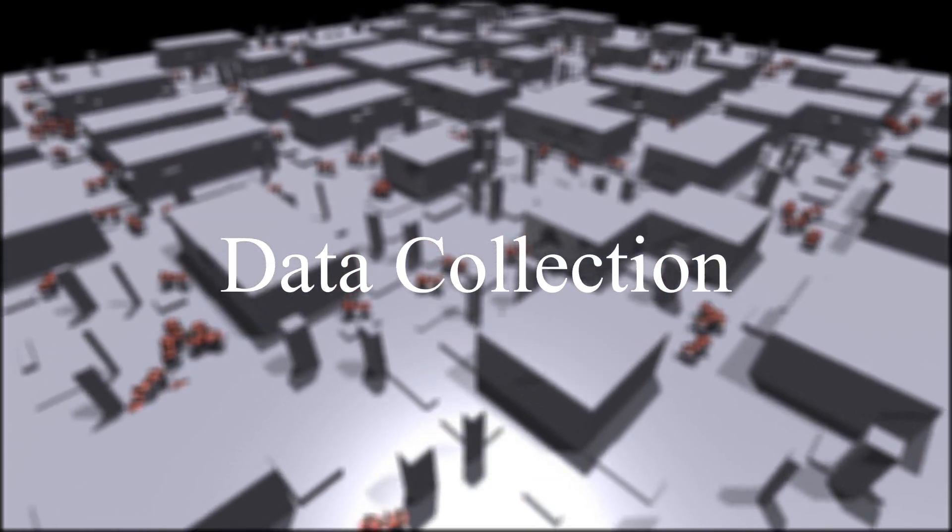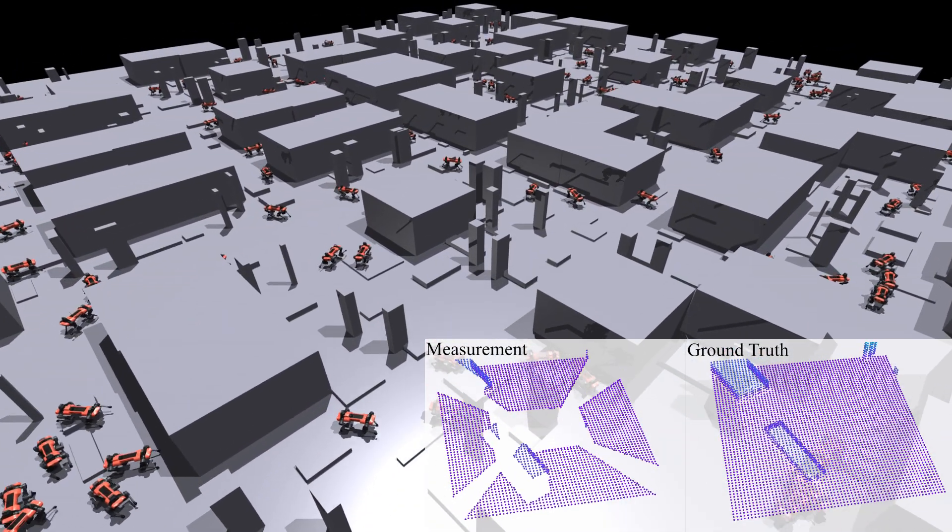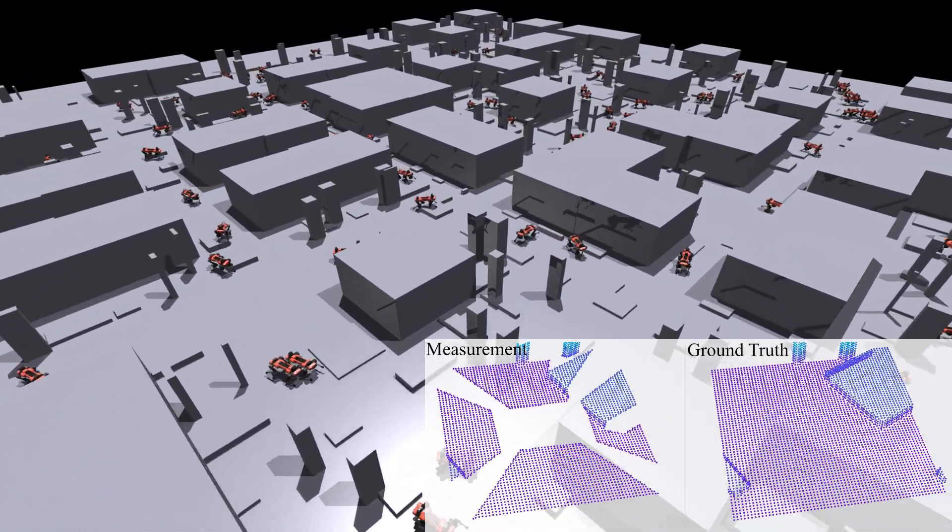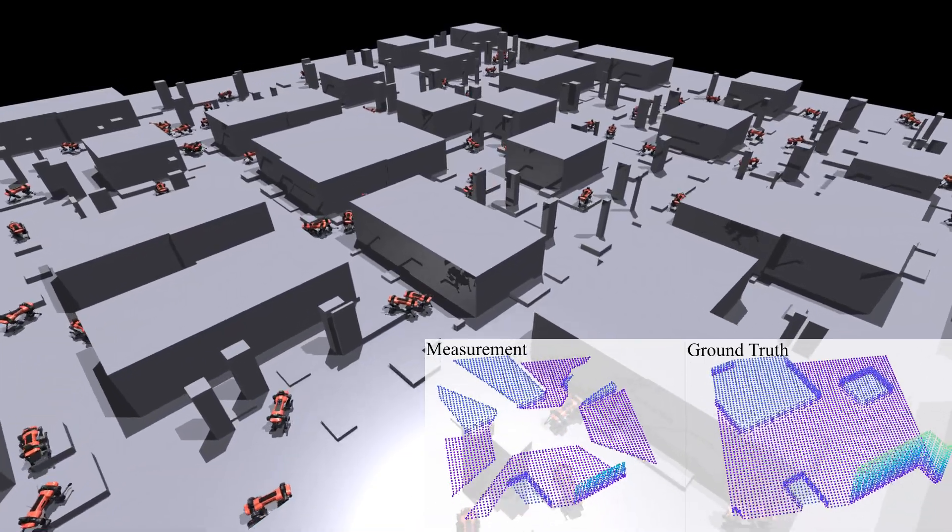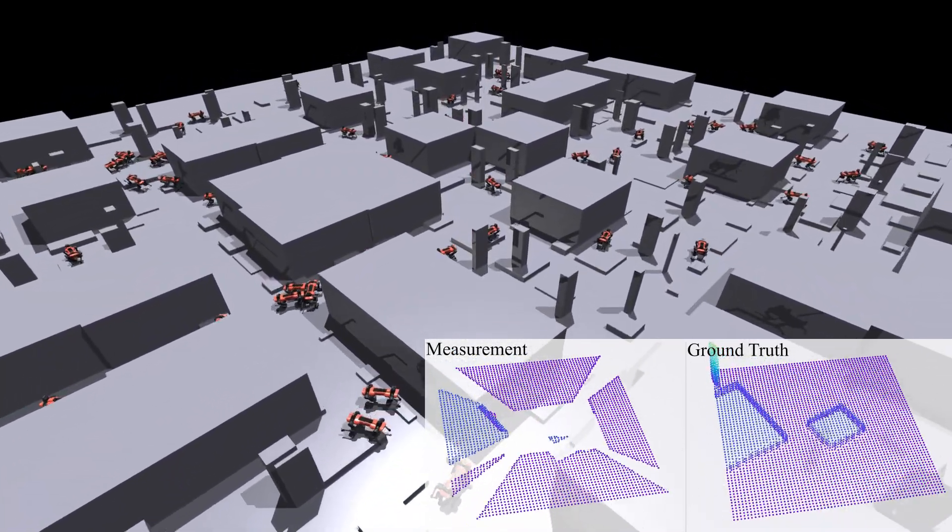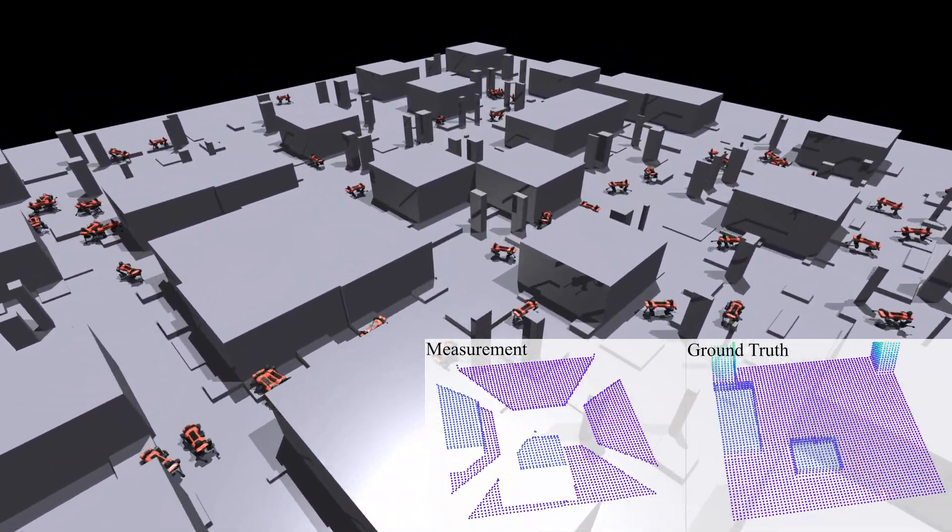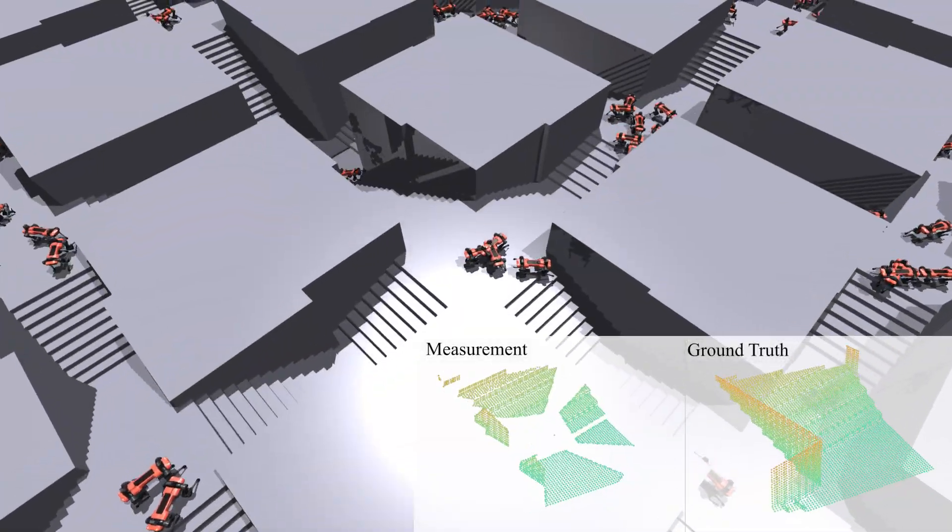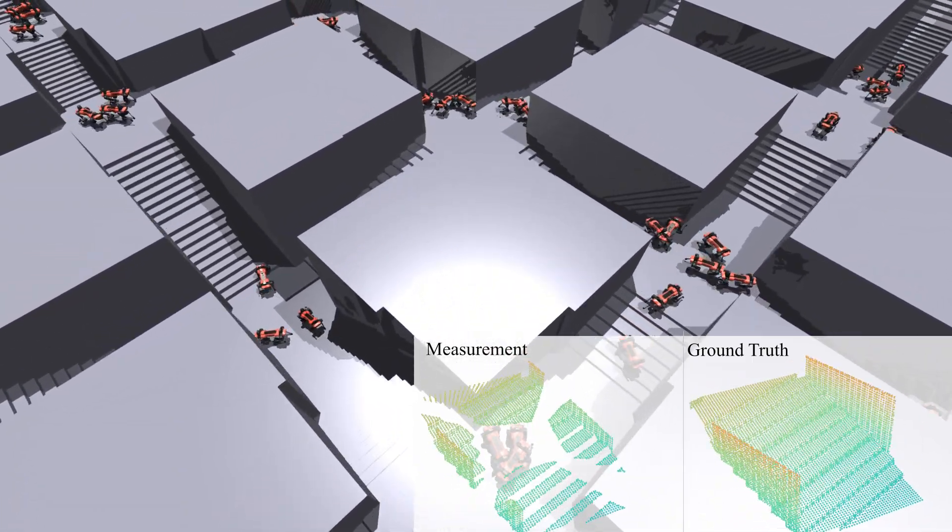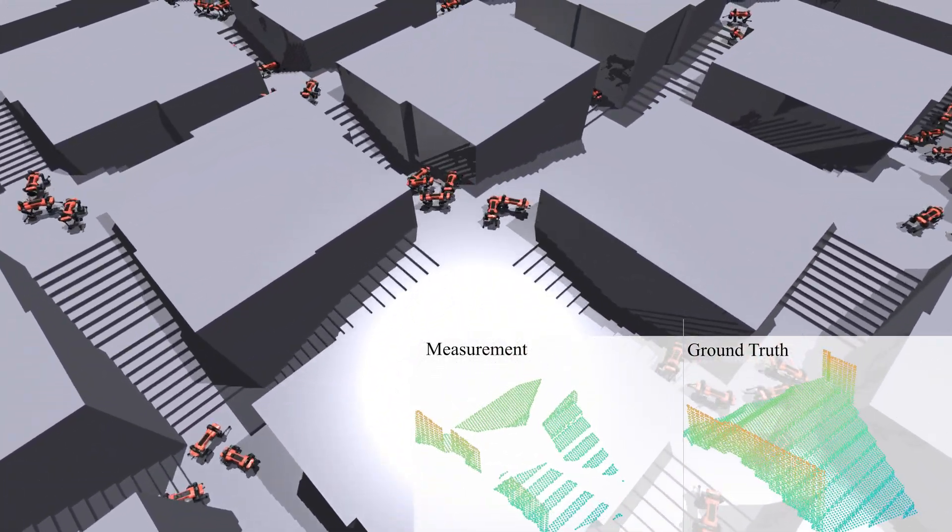A key element for successful reconstruction of urban environments is the training data. We generate structured environments in simulation using NVIDIA's Isaac Gym. The spatial configuration is fully randomized to reflect the diversity of the real world. The robots are spawned on the terrain and we record the robot's trajectories and the measured and ground truth point clouds around the robot.